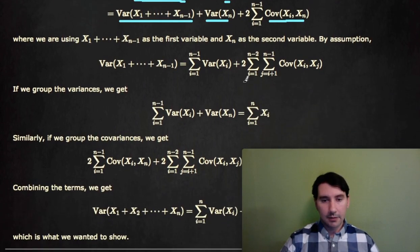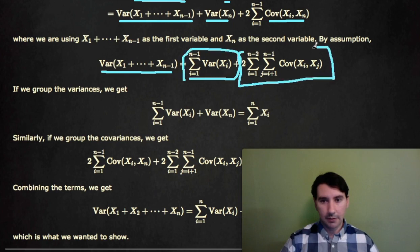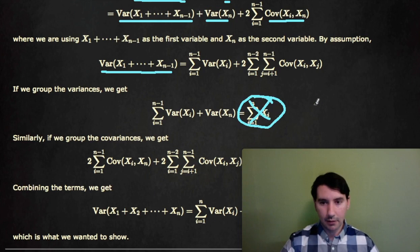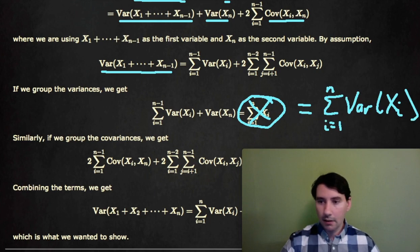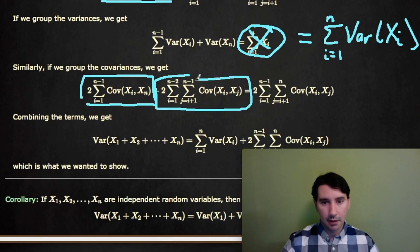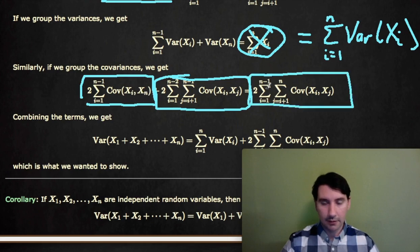By the inductive hypothesis, the variance of the sum X1 to Xn minus 1 equals the sum of the variances plus 2 times the sum of the pairwise covariances. Combining all the terms: the variances of Xi from 1 to n minus 1, together with the variance of Xn, give the sum from i equals 1 to n of the variances of Xi. Adding all pairwise covariances up to n minus 1 and the pairs involving Xn gives all pairwise covariances from 1 to n.